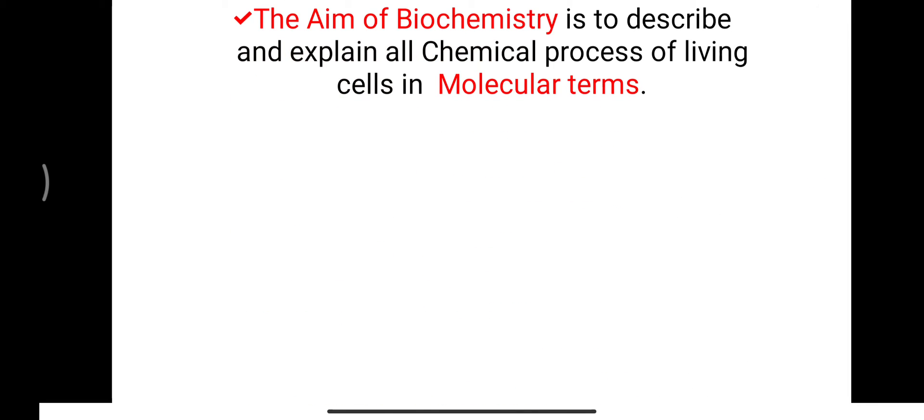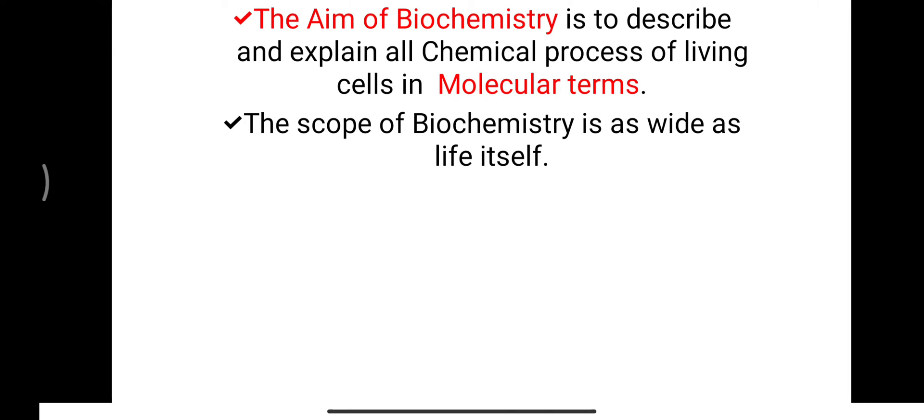The basic aim of biochemistry is to describe and explain all chemical processes of living cells in molecular terminology. For example, diabetes mellitus — we know that basically in diabetes, the glucose level is increased. Glucose is one type of molecule — so in molecular terms, if our glucose level is normal, that is a healthy person, but if the glucose level is high, that is a disease condition called diabetes mellitus. All diseases can be explained in the form of molecular terms.